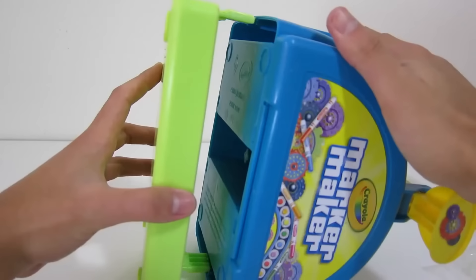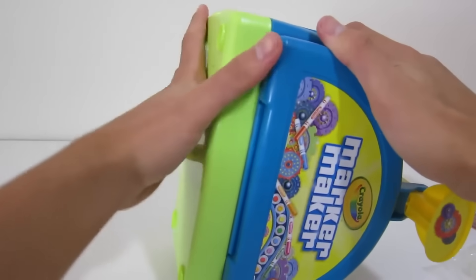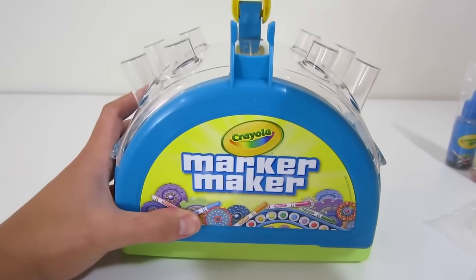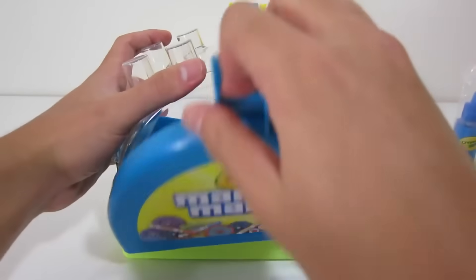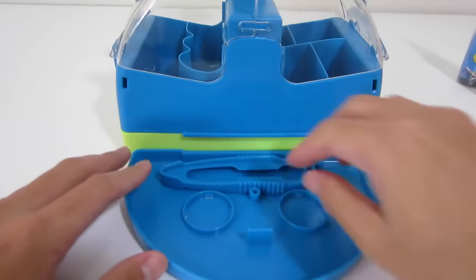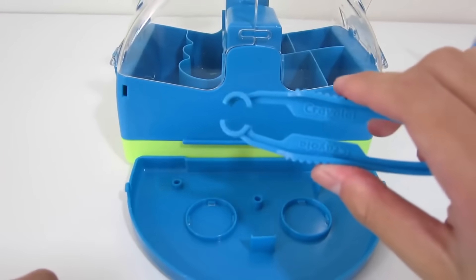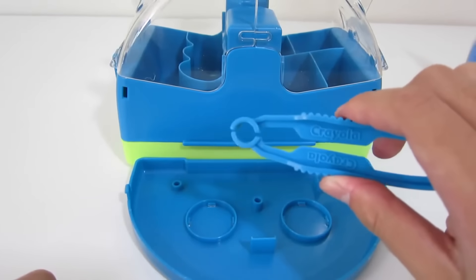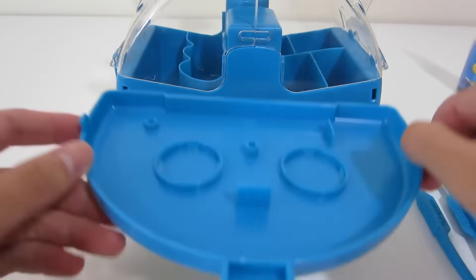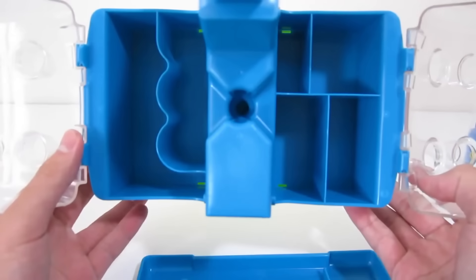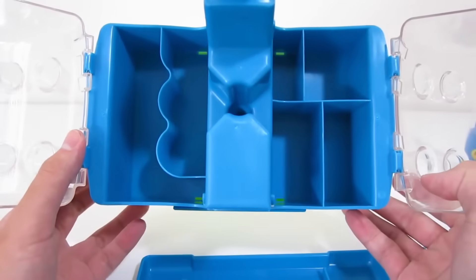Here's a tray. Here are the Crayola tweezers. This is where we put our tubes. And here's where we'll be keeping all of our supplies.